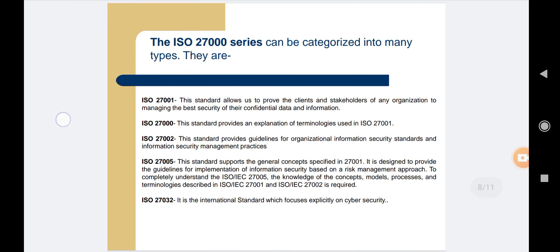The first category is ISO 27001. This standard allows organizations to prove to clients and stakeholders that they are managing the security of their confidential data and information. This standard involves a process-based approach for establishing, implementing, operating, monitoring, maintaining, and improving an ISMS.